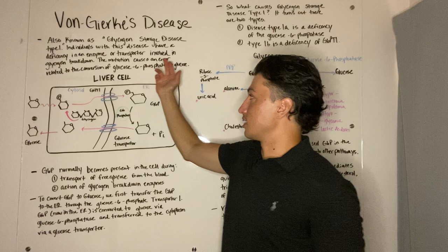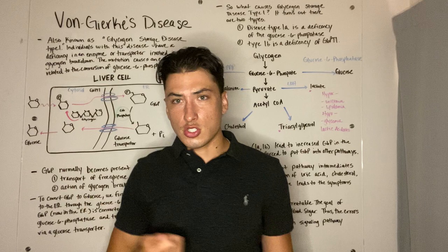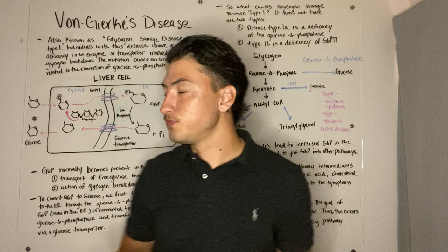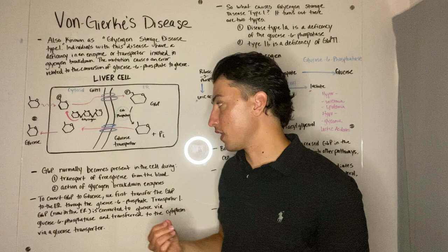The mutation causes an error related to the conversion of glucose 6-phosphate to glucose. So we know that we have a hard time dealing with glucose 6-phosphate whenever it's present inside the liver cell. Let's look at how we get glucose 6-phosphate inside of the cell in the first place.